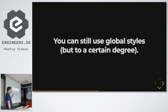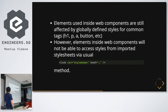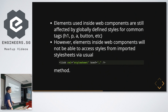You can still use global styles to style web components to a certain degree — to do some common generic styling for commonly used text. But say for example you're importing some kind of third-party CSS stylesheet, maybe Bootstrap or Minify CSS or whatever — the workaround is that inside your Shadow DOM you just need to specify a style tag and import the CSS that you need.